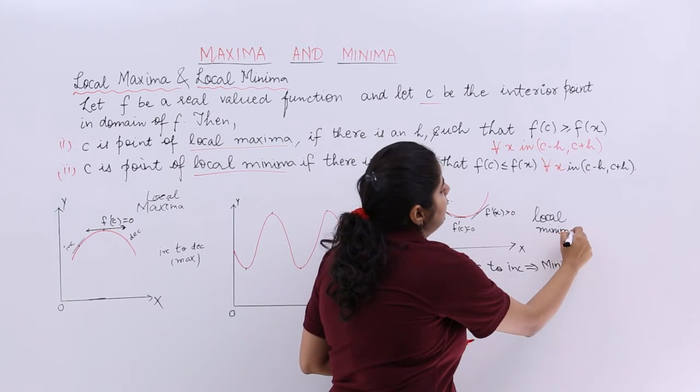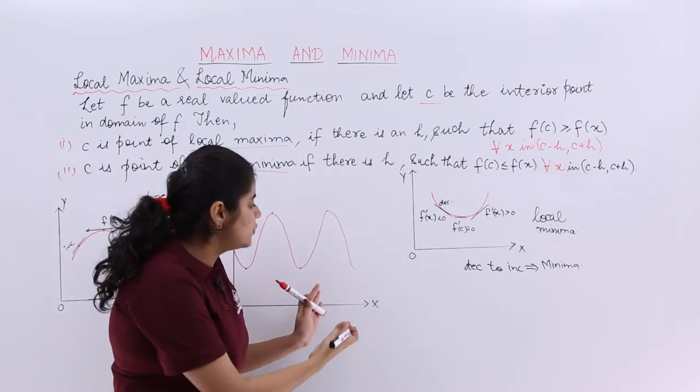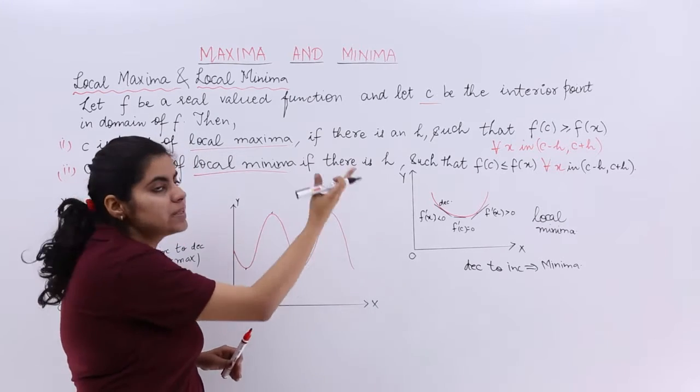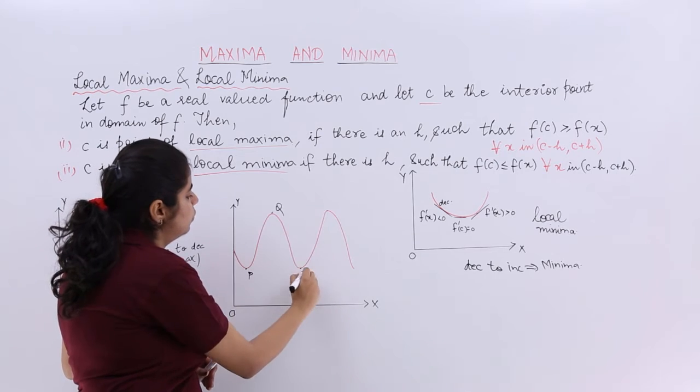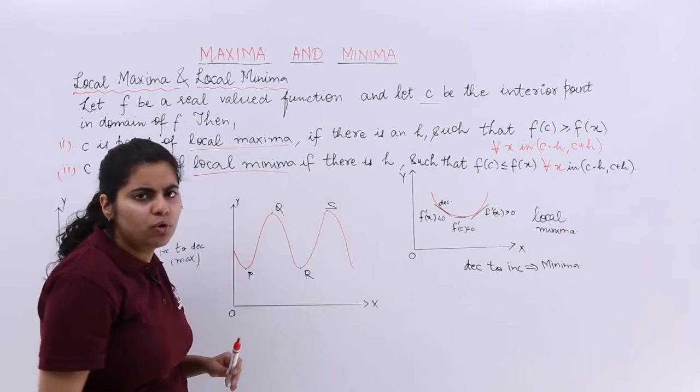Now if you have any random graph, say this is the graph which is randomly given to you. And there are many turning points in this graph. Let's name it P, Q, R, S. Let four points be only there.